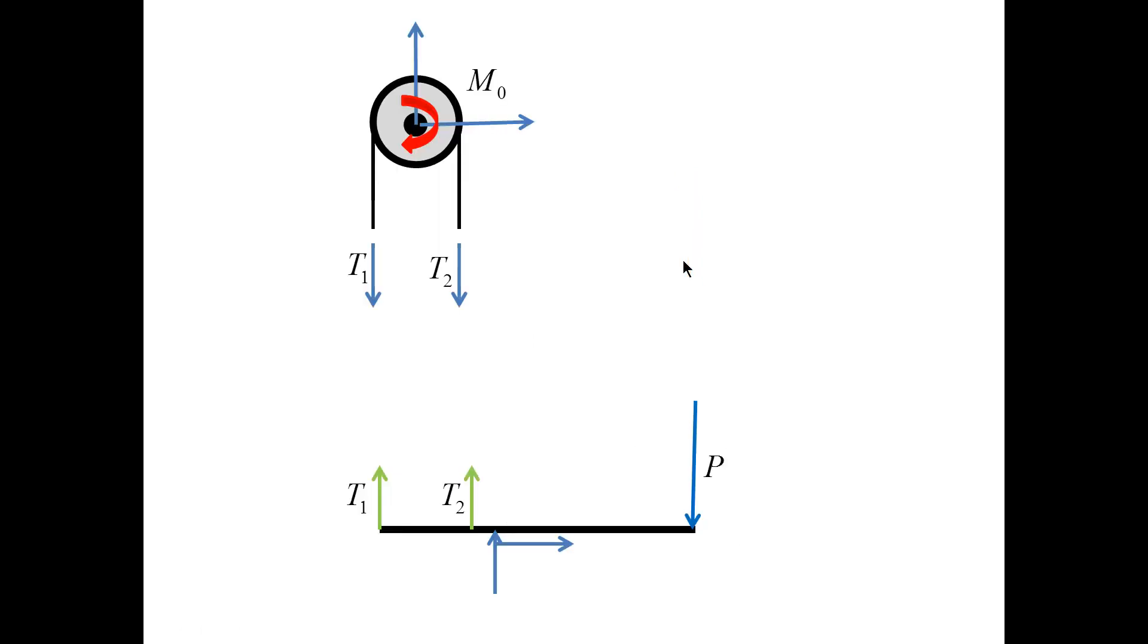We analyze this brake by looking at the free body diagrams for the wheel and the beam. For the wheel, we have the forces T1 and T2 tensions in the cable, the forces induced by the motor, and finally the torque M0 induced by the motor.